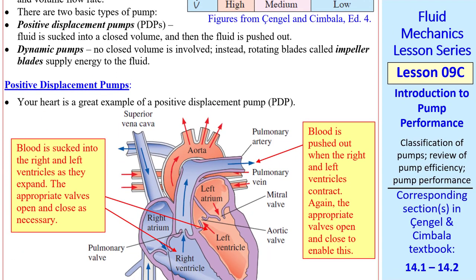Now let's talk about the distinction between the two basic types of pump, positive displacement pumps and dynamic pumps. PDPs are pumps where fluid is sucked into a closed volume and then the fluid is pushed out. Dynamic pumps, on the other hand, have no closed volume. Instead, they have rotating blades, called impeller blades, that supply energy to the fluid.